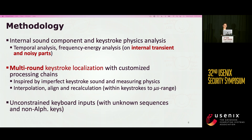To solve these challenges, we use a signal analysis and processing approach. By analyzing the internal sound components of keystrokes, we will show there are different components in a keystroke, and not all of them can lead to precise localization. Inspired by imperfect keystroke sound physics, we propose a multi-round keystroke localization method with customized signal processing. Finally, we consider unconstrained keyboard input, which can include non-alphabetic keys and unknown sequences commonly found in users' sensitive information.